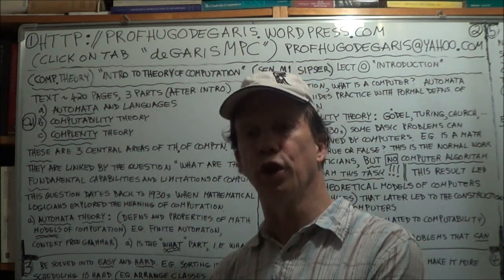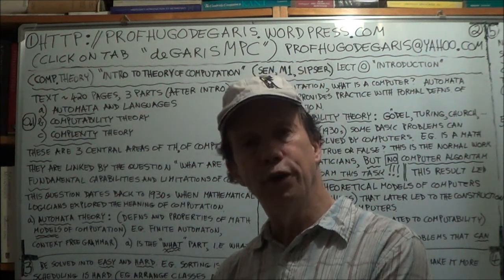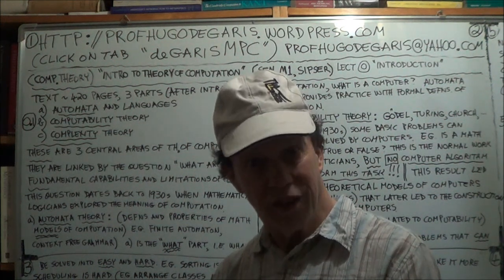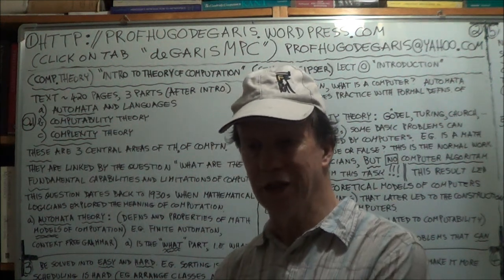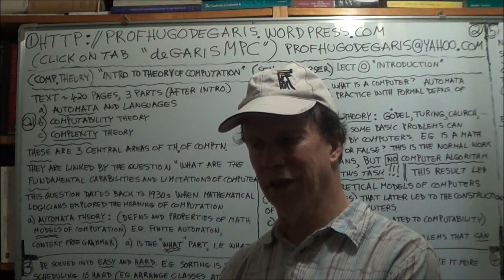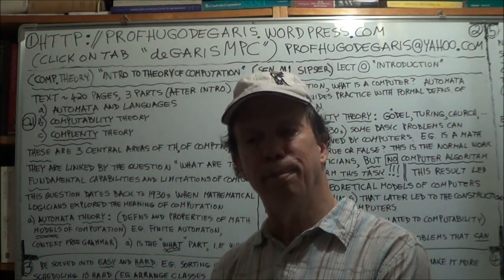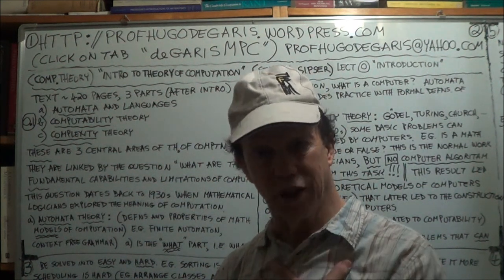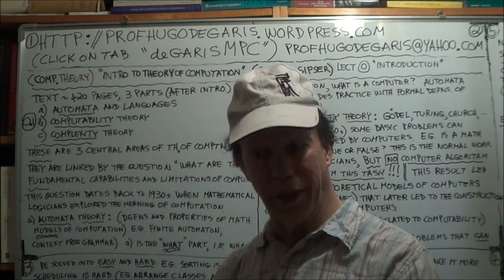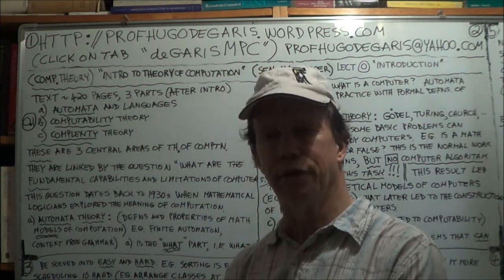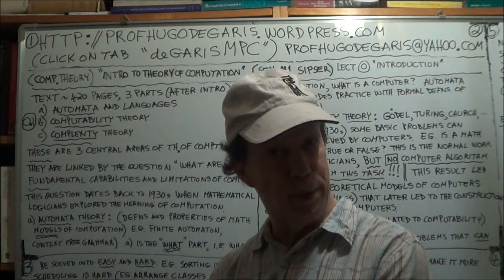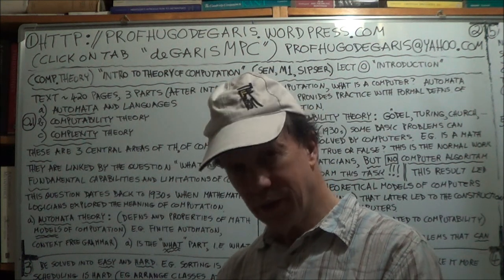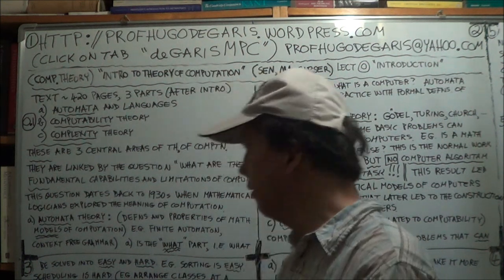Historically, the word 'computer' referred to a person — a person who computed. It's only relatively recently, in the last half century or so, that the word 'computer' now automatically refers to a machine, not a person, not a human being.